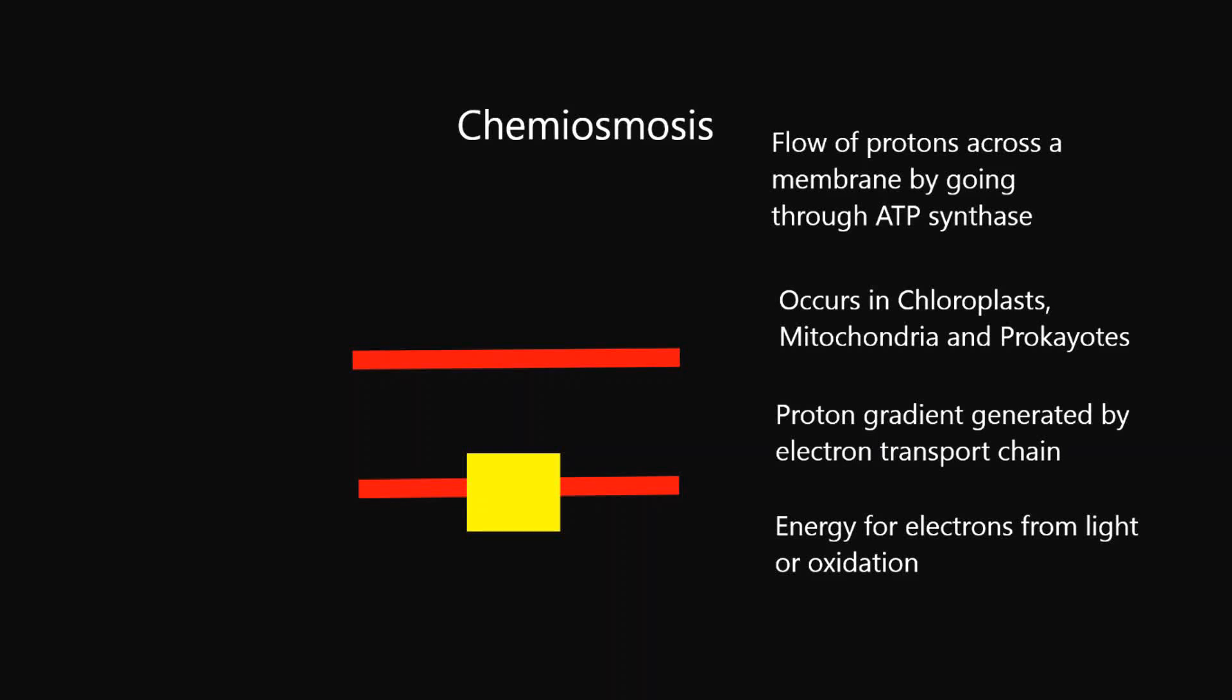Chemiosmosis is the generation of ATP through the flow of protons across a membrane, and those protons are going through an enzyme called ATP synthase.